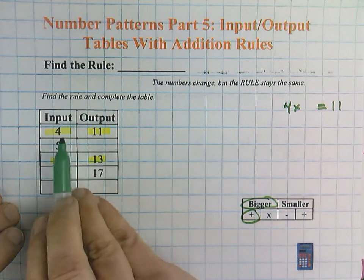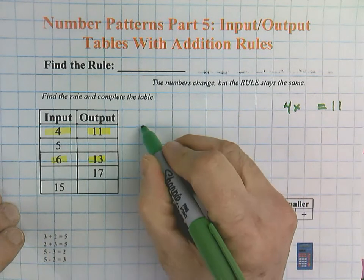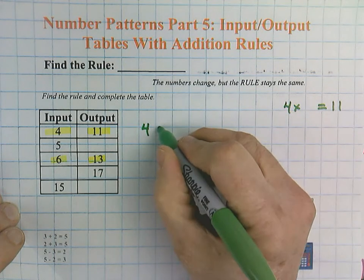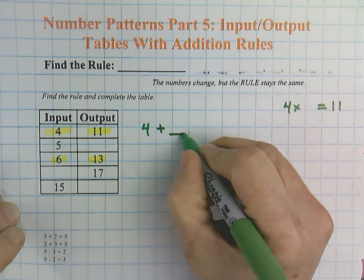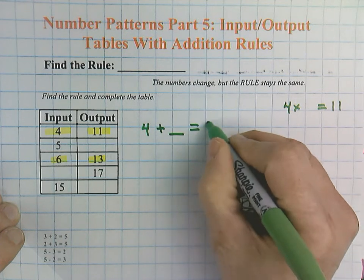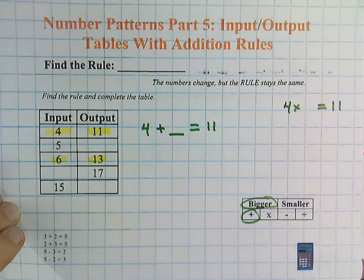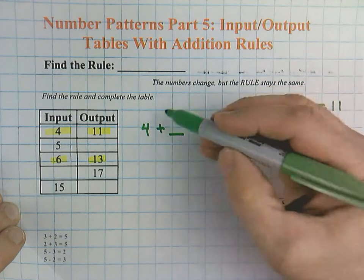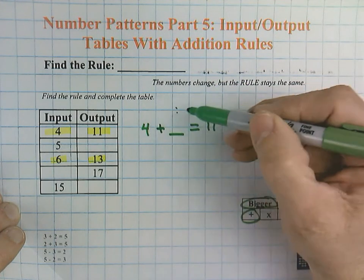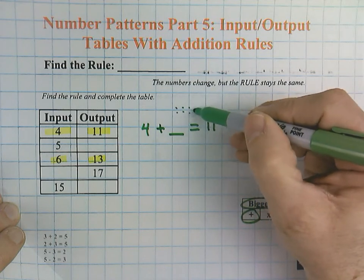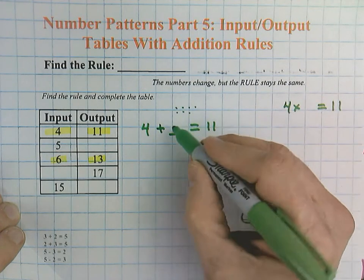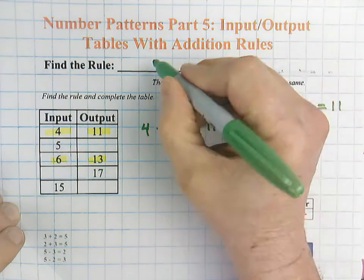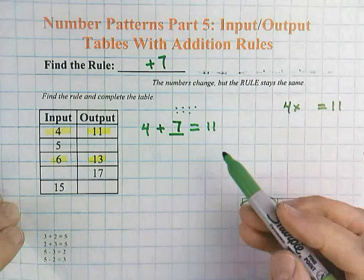I'm going to show my work here. We're going to start with our 4. So: 4 plus blank equals 11. One way is a count-on strategy — you could say 5, 6, 7, 8, 9, 10, 11 — and count that to see that would be 7. So in other words, this would be a plus 7 rule.